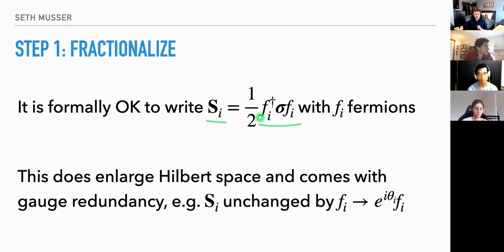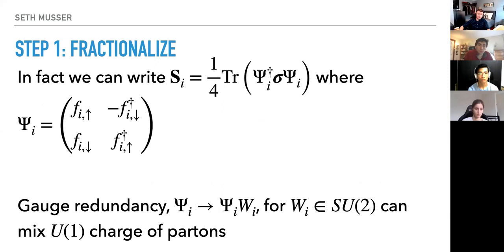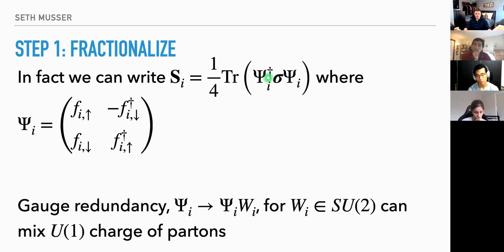Since spins are physical, we should be able to perform this gauge transformation freely without changing our physical theory. You can go further: writing the spin in terms of a matrix of complex fermions, instead of just a U(1) gauge redundancy, you have an SU(2) gauge redundancy. Here we can mix the U(1) charge of our fermions. As long as we have some W_i within SU(2), we won't change the physical spin.